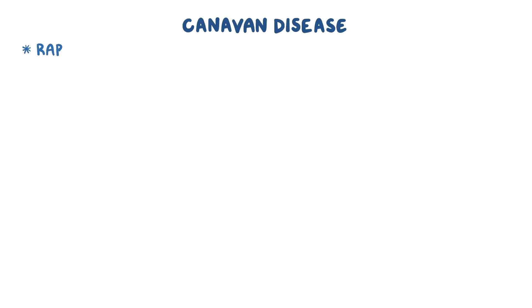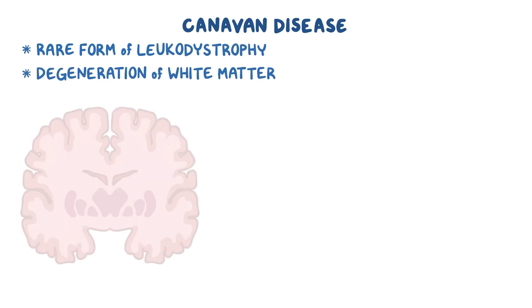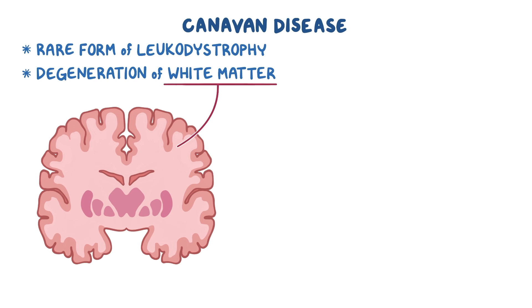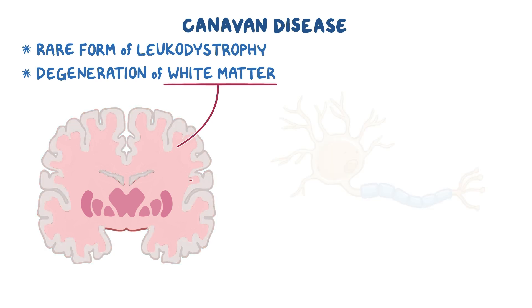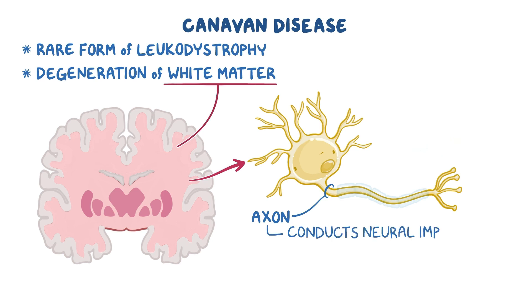Canavan disease is a rare form of leukodystrophy, a group of conditions that result in the degeneration of white matter in the brain, which is the part of the cerebral cortex filled with myelinated axons. An axon is the part of a nerve cell that conducts neural impulses, allowing neural signals to travel throughout the nervous system.